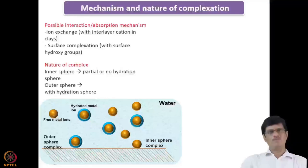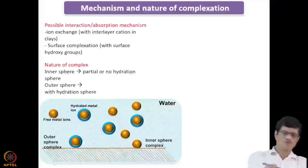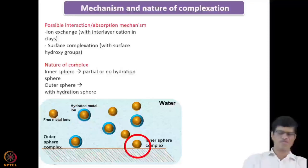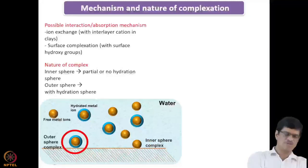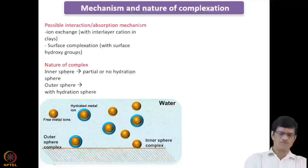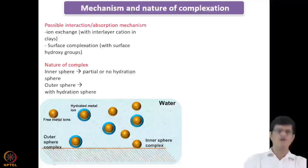The nature of the complex can be either inner sphere or outer sphere. In the case of inner sphere complexation, there will be either partial or no hydration sphere around the metal ion when it forms the complex — the water molecules around the metal ion are removed before it forms a complex with the clay mineral. In the case of outer sphere complexation, the water molecules need not be removed; the metal ion interacts with the clay mineral surface through its hydration shell.